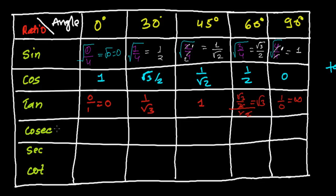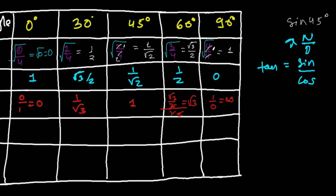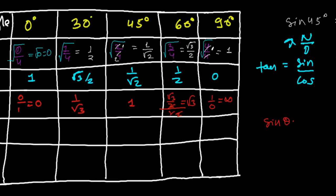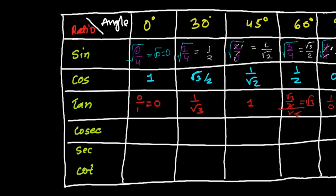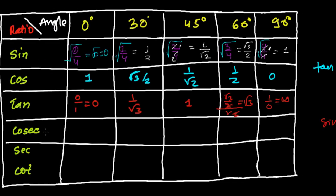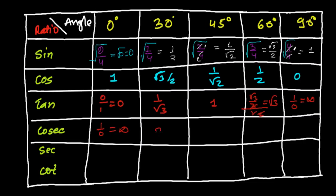For cosecant, we know that sine θ × cosec θ = 1, so cosec θ = 1/sin θ. Cosecant is just the reciprocal of sine. So cosec 0° = 1/0, which is undetermined. Cosec 30° = 2, cosec 45° = √2, cosec 60° = 2/√3, and cosec 90° = 1/1 = 1.